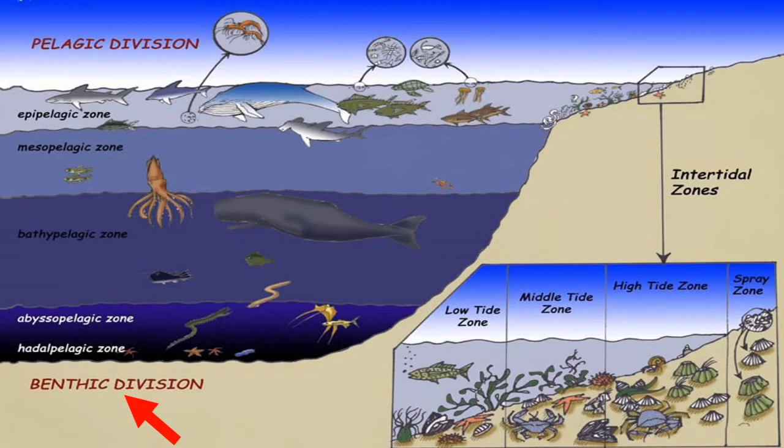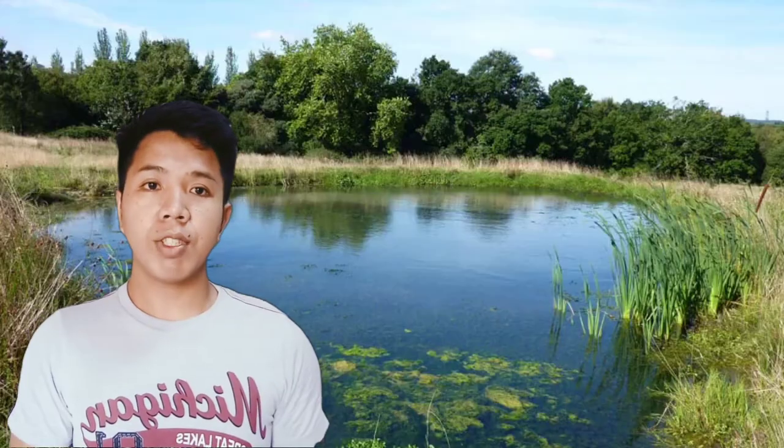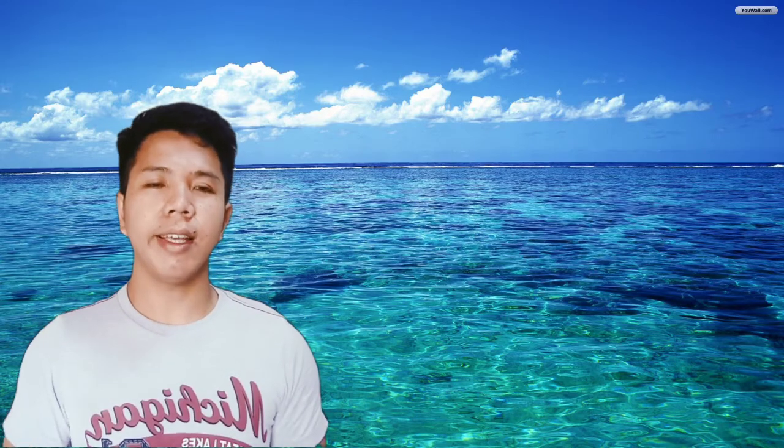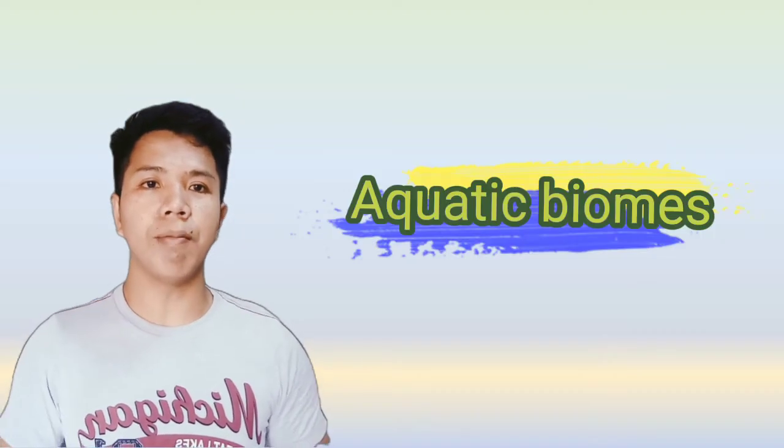The benthic division includes organisms on the continental shelf or sublittoral, the continental slope or bathyal, and the abyssal plain. From small ponds to huge oceans, the aquatic biome makes up a very important part of our planet.